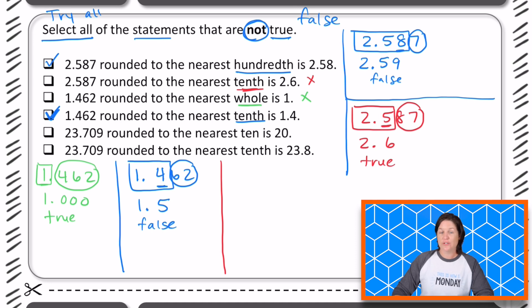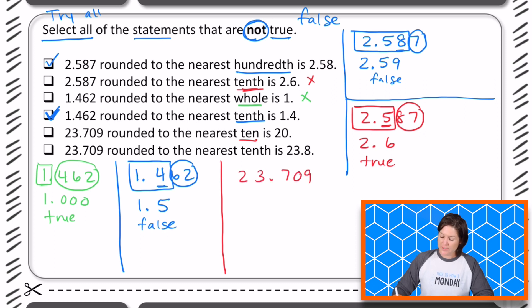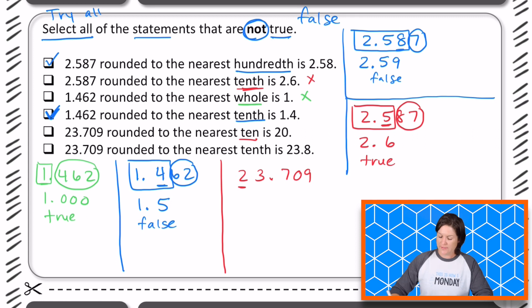Now for the next one, we have 23.709 thousandths rounded to the nearest ten is 20. So let's write this number down. Rounded to the nearest ten, so the digit two is in the tens place, which means we have two tens. And behind it, we have three ones. Well, halfway between two tens and three tens would be 25, and this is less than that. So this would round to the ten prior, which would be two tens, which is 20. So this is true, but we are looking for answers that are false, so we can eliminate that one.